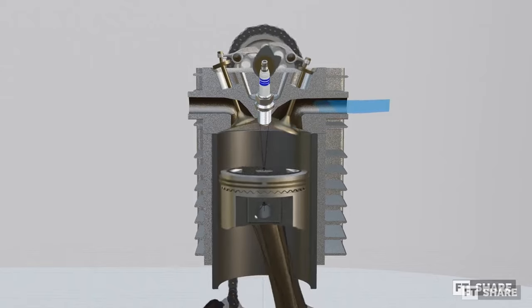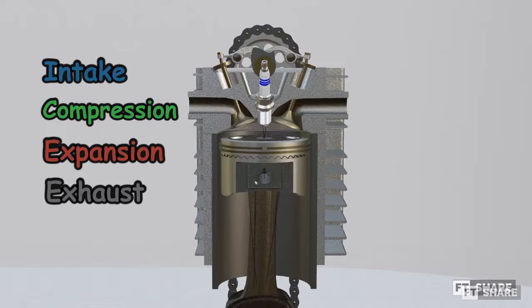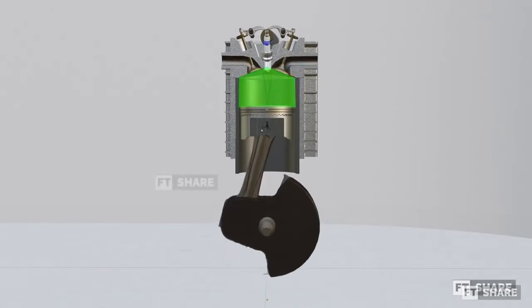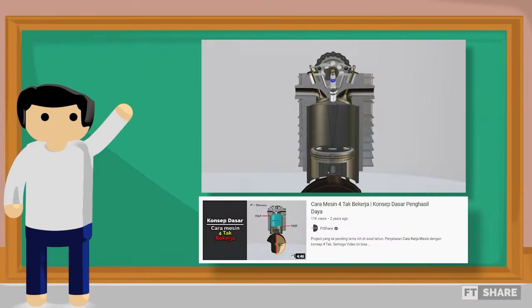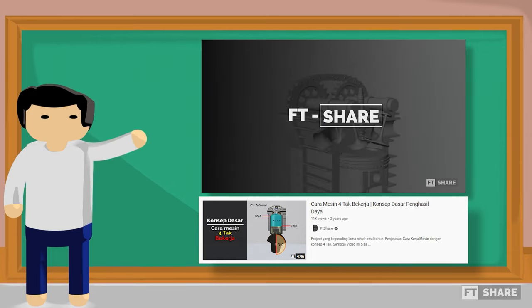Each step of this 4-stroke engine consists of intake, compression, expansion, and finally, the exhaust process. We may not explain them individually because we believe friends who watch this video understand the 4-stroke engine cycle very well, right? If not, you can also watch our old video about 4-stroke engines. We'll put the link in the description column below.